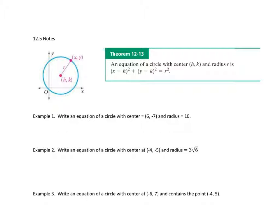12.5 talks about the formula for an equation of a circle. The center of the circle is (h, k), where h represents the x-coordinate and k is the y-coordinate. The points (x, y) are all points on the circle. The formula is: (x minus h) squared plus (y minus k) squared equals the radius squared.